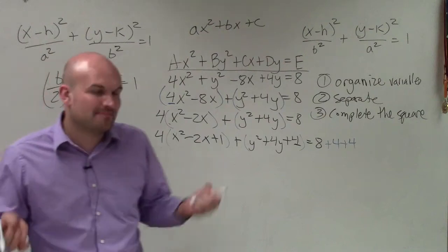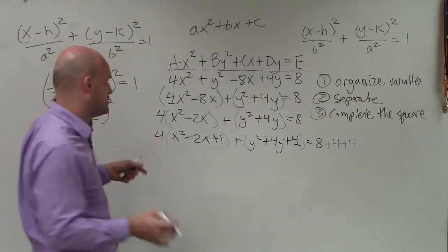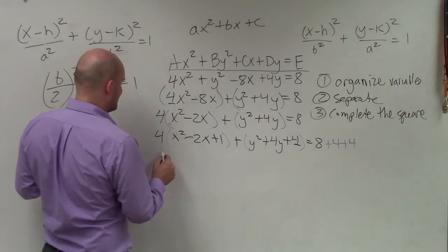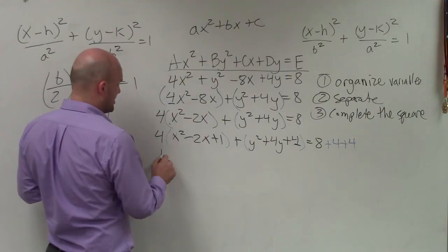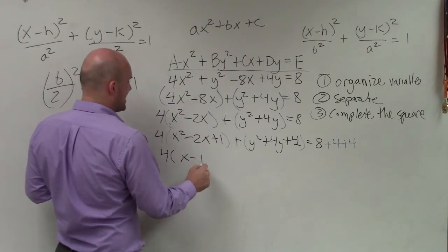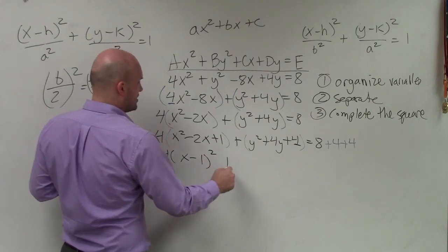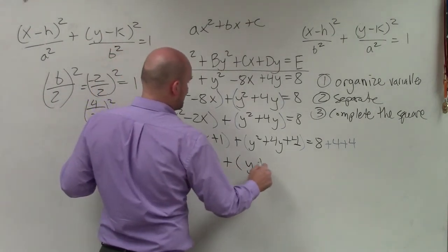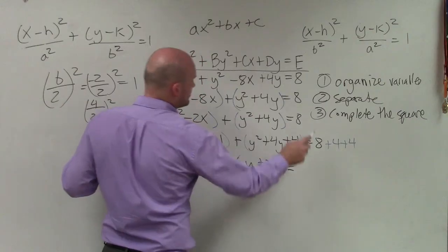Now, I have created, by using and completing the square, perfect square trinomials. So now, I can rewrite these as a binomial squared. And by doing that, I just factor these as binomial squared. So this one would be (x - 1)² + (y + 2)² = 16.